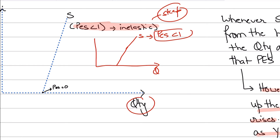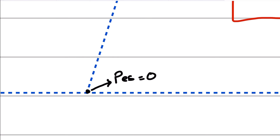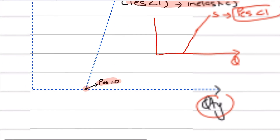This is something many students do not know, and it is often tested in MCQs. Students usually recognize an inelastic supply curve, but they don't know that the PES value increases as you move up the curve. Also remember: at the point where the inelastic supply curve touches the horizontal axis (quantity axis / x-axis), the value of PES is equal to 0.